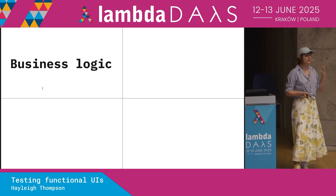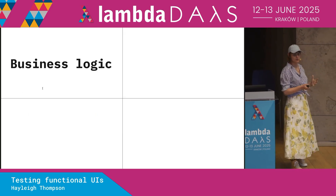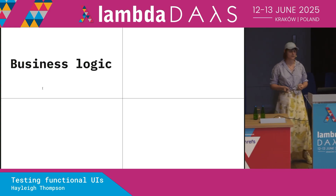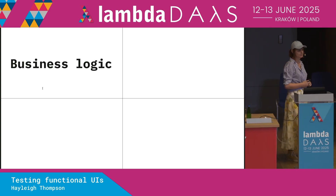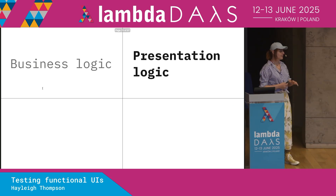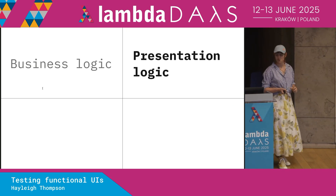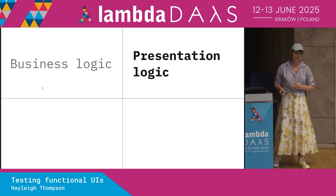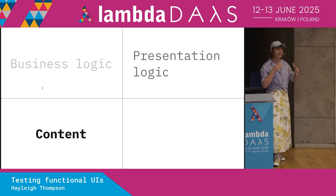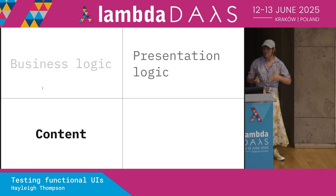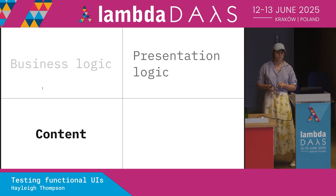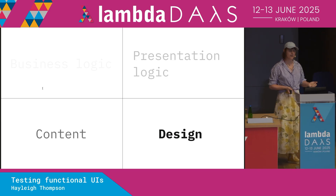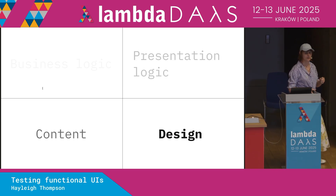The first is business logic — any kind of computation that's not tied to rendering: decoders, derived data, anything like that. The next is presentation logic — the opposite: the code that works out what to show and when, organizing state transitions. We have our content: the text that we're displaying, the prose. And of course, we have the design: what does it look like? Does it match our branding? Is it using our design system?